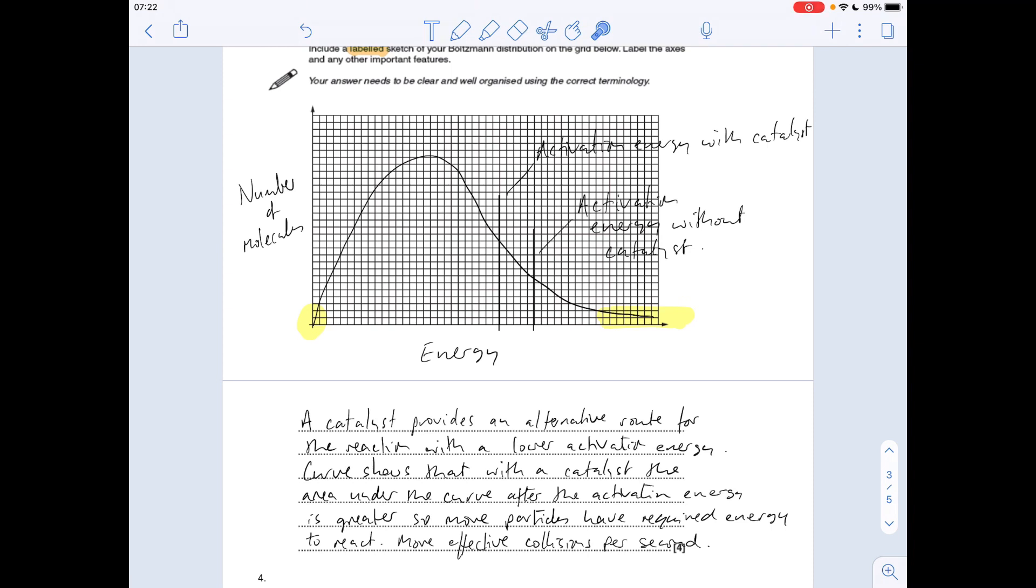So the curve shows that with the catalyst, the area under the curve after the activation energy is greater, so more particles have the required energy to react. Therefore, more effective collisions per second, something like that.